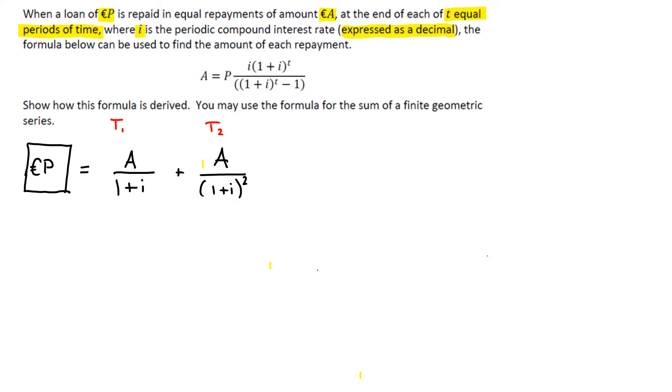Think of it as whatever you want time period wise. And the last one will be 1 plus I to the power of however many time periods there are, which in our case we were told was T. So this is T T.